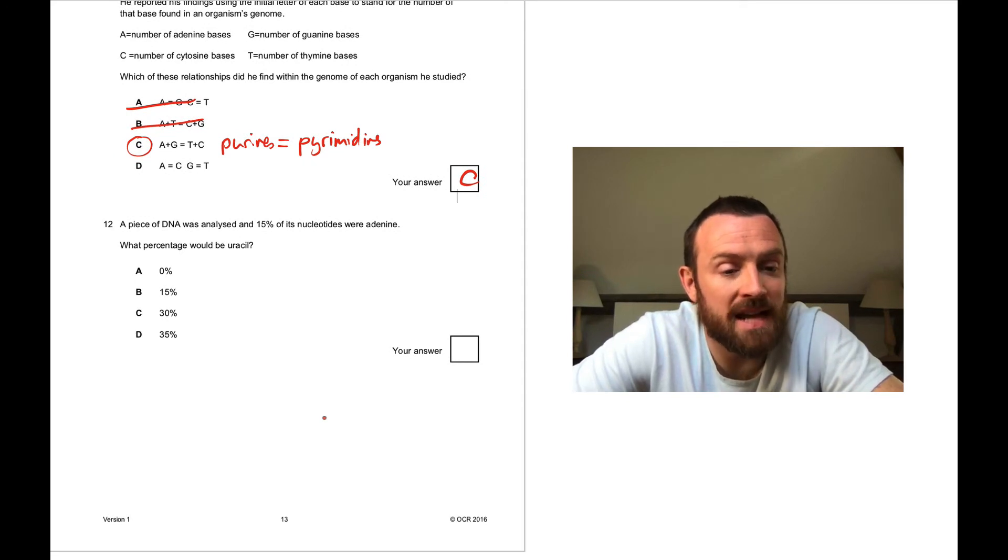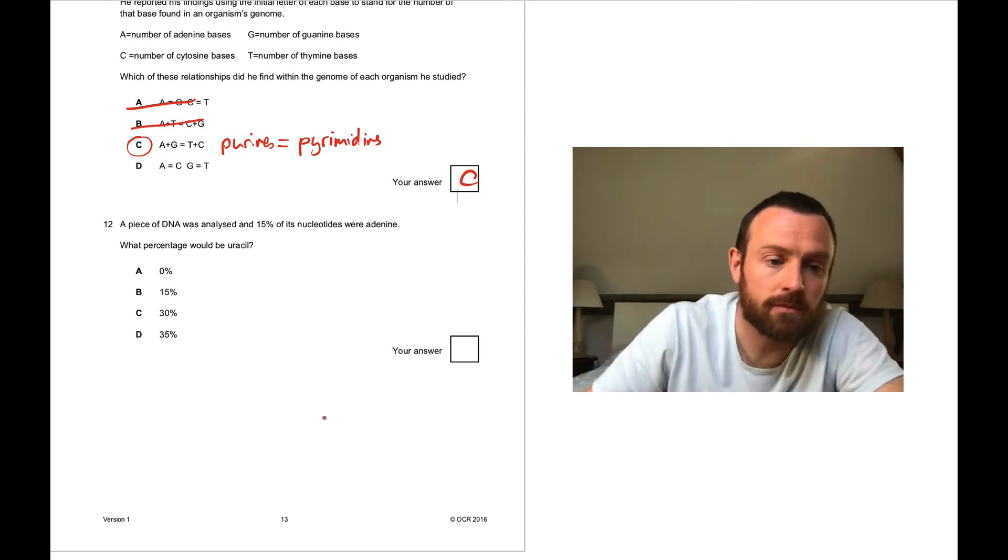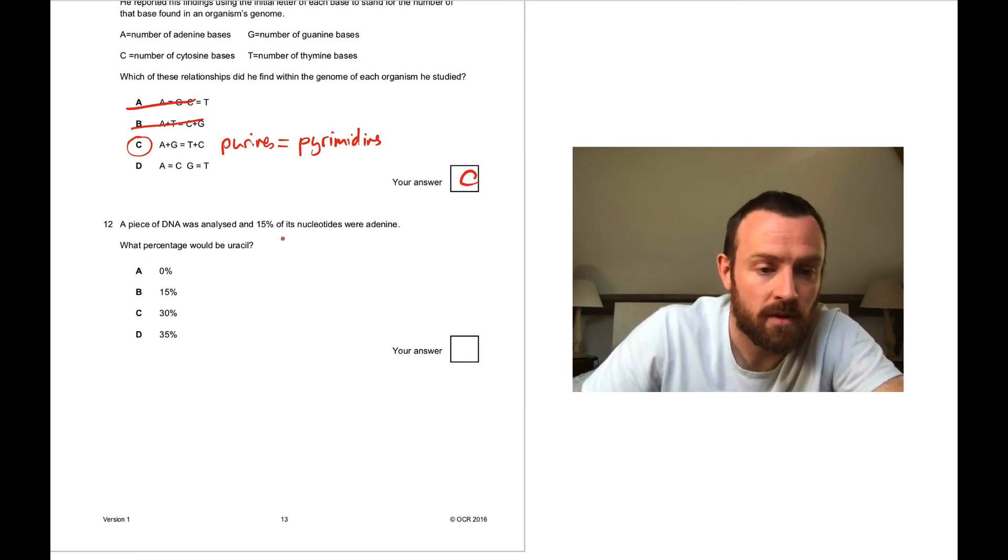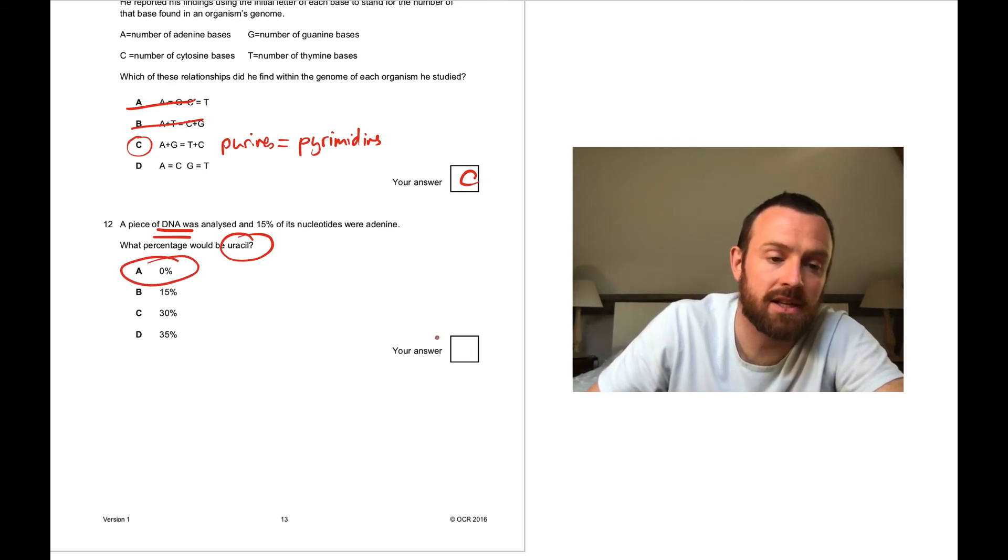A piece of DNA was analyzed and 15% of its nucleotides were adenine. What percentage would be uracil? It's zero because uracil is only found in RNA. That's a tricky one there.